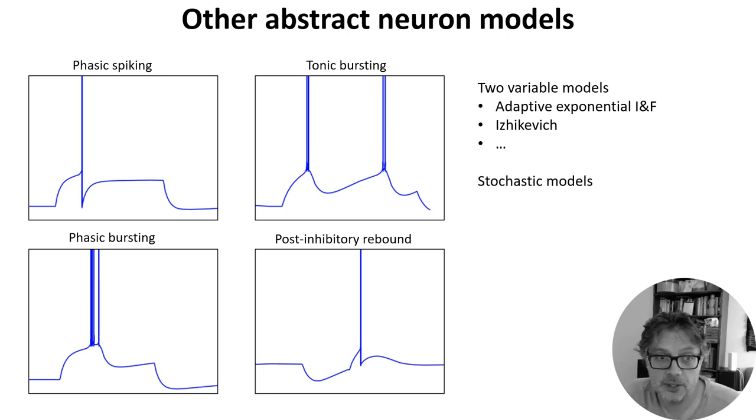There's also stochastic neuron models, based either on having a Gaussian noise current or a probabilistic spiking process. And taking that further, there are Markov chain models of neurons, where you can model the probability of neurons switching between discrete states.